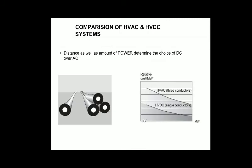Distance as well as the amount of power determine the choice of DC over AC. As shown on the graph, with increasing power, relative cost decreases for both HVAC and HVDC — comparing HVDC single conductor versus HVAC three conductor. Both decrease, but after a certain distance HVDC decreases more compared to HVAC, making it economically more efficient.